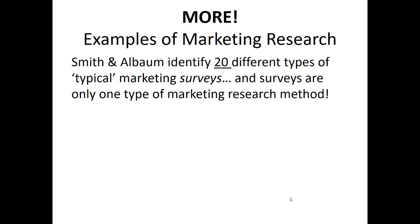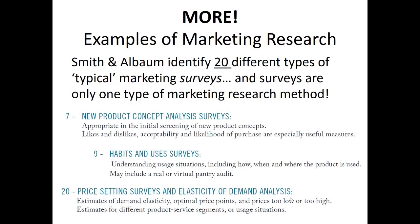To illustrate three of those typologies: Number seven is a new product concept analysis survey, where marketers try to figure out — before producing a new product, service, or app — what consumers might initially react to, using surveys or experiments to screen new product concepts. Number nine is habits and uses surveys, designed to figure out the daily, weekly, or monthly habits people have related to a product — for example, asking kayak buyers about their leisure activities on the water. Finally, price-setting and elasticity of demand surveys help marketers determine the optimal price to maximize profitability, especially when a product hasn't yet come to market.